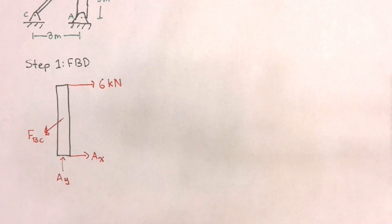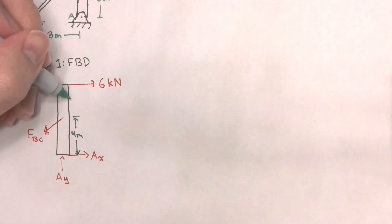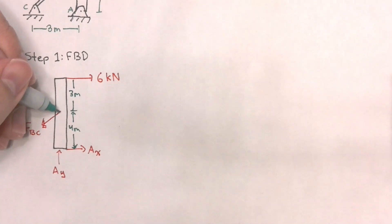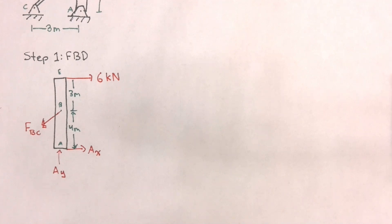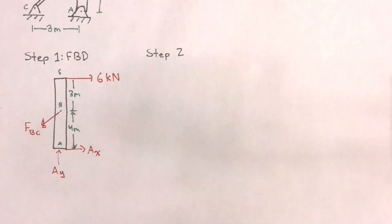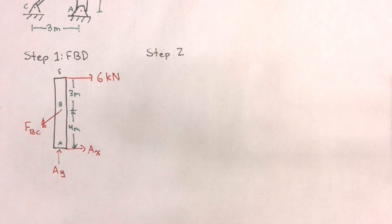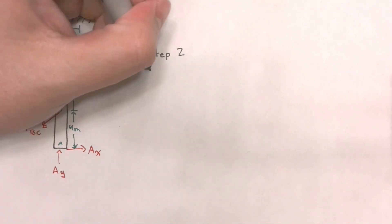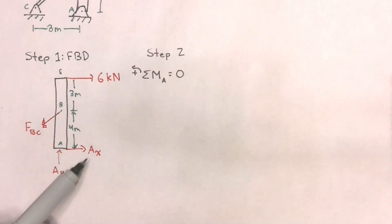So this is what my free body diagram looks like. I can draw some dimensions: we have 4 meters from point A to point B, and 3 meters from point B to point E. We're not counting point D just yet, because we're drawing this free body diagram so that we can find our reaction forces first. To find our reaction forces, we have to apply the equations of equilibrium. Let's start by taking the sum of moments about point A. We don't want to take the sum of forces along x or y first because we'd end up with two unknowns. We choose point A to eliminate two unknowns.